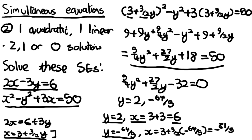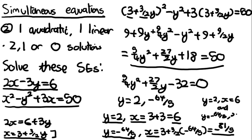So the solutions are: x = 6, y = 2 and x = −81/5, y = −64/5. If you have time and want to check, substitute the solutions back into the original simultaneous equations to see if you get the expected results.